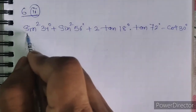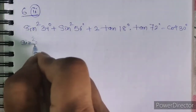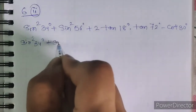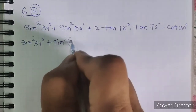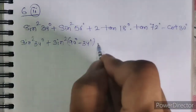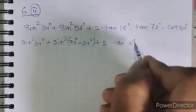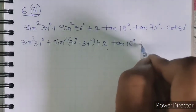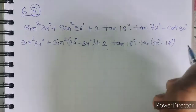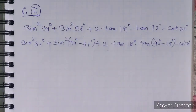It's very simple. We rewrite sin square 56 as sin square(90 - 34) degrees, which becomes cos square 34 degrees. For the tan term, we write tan 72 as tan(90 - 18) degrees.